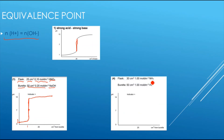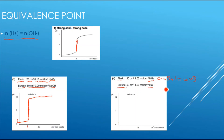In a second example, we have a weak base in the flask and a strong acid in the burette. We find the moles of base in the flask: 0.03 × 1 = 0.03 mol. Then the volume of acid required: 0.03 ÷ 1 = 0.03 dm³, which multiplied by 1000 gives 30 cm³.